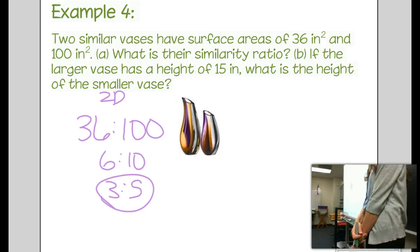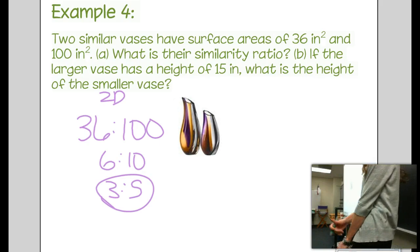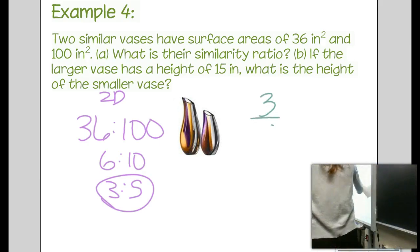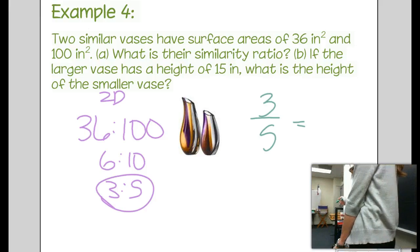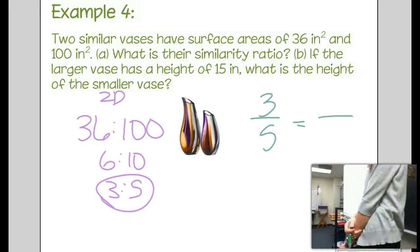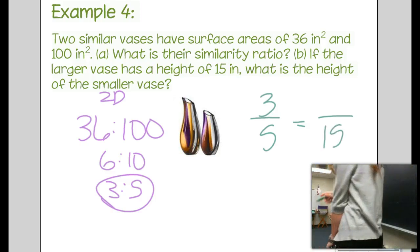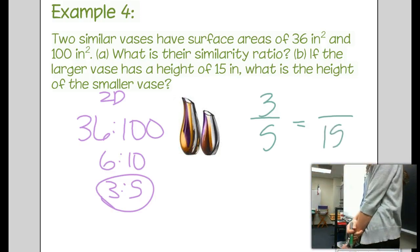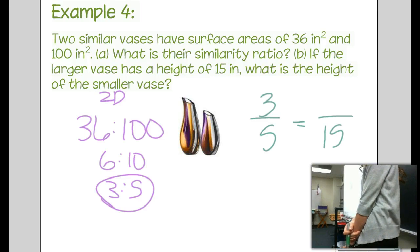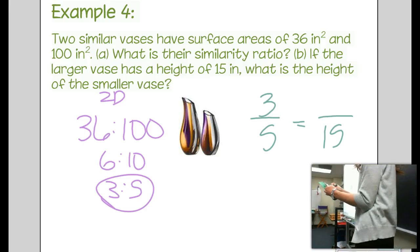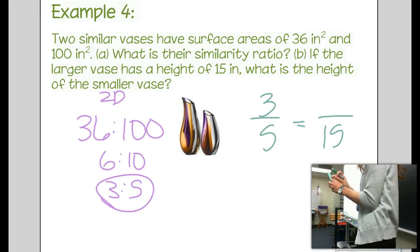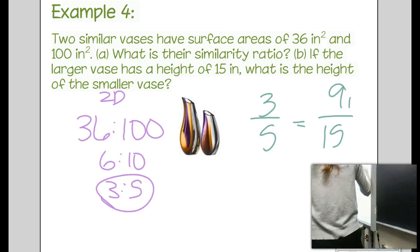If the larger vase has a height of 15, what's the height of the smaller vase? We're going to set up a proportion. We still don't have to touch our formulas. Three is to five as, where do I put the 15? If I put it in the wrong spot, I'm going to get it wrong. 15's on the bottom. It's the larger one. Very good. So it goes there. Cross multiply. Old news. Three times 15 divided by five. Melanie, what do you get? Nine inches tall.